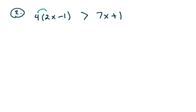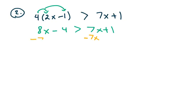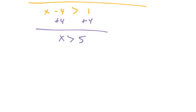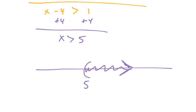More of the same — we're going to distribute. We get 8x minus 4, greater than or equal to 7x plus 1. Pause the video and try it on your own. We subtract 7x from both sides, then add 4 to both sides, and x is greater than 5. If I graph it, it's a parenthesis at 5, shading off to the right — the arrow is pointing to the right.